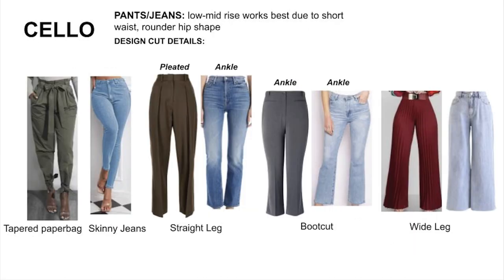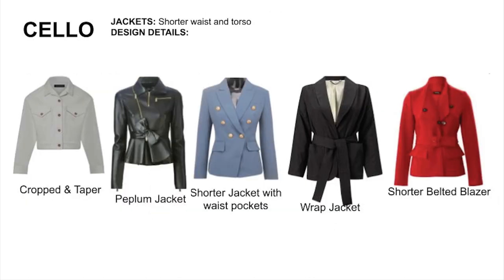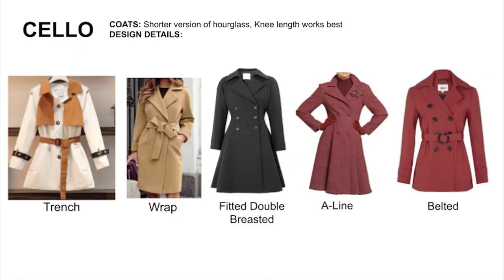For pants and jeans, low-rise to mid-rise works best. The waistline needs to be curved inwards from the hip. Make sure it's roomier around the hips to stop whiskering from the crotch area and avoid camel toes. For jackets, the design details should be focused on the shorter waist, with the jacket either cropped or with a curvier waistline. For coats, it should be belted or cut with a fit-and-flare silhouette.